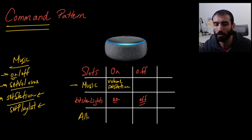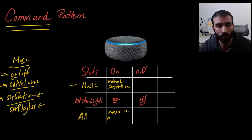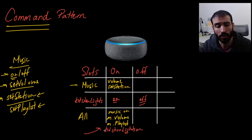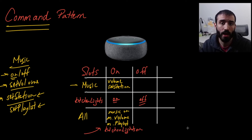What if we want to combine these things? If we say 'Alexa, turn all things on,' that can combine all this functionality together — music on, music volume, music playlist, and kitchen lights on. You can see we're encapsulating all these different behaviors into just one abstraction for 'on,' but it applies differently to all these different objects. Now I want to take you into my IDE and show you an example of this actually working, so you can see how the interfaces and everything are set up.